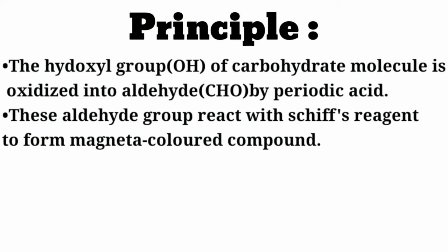The principle of PAS stain: the hydroxyl group (-OH) of carbohydrate molecules is oxidized into aldehyde (-CHO) groups by periodic acid. This aldehyde group then reacts with Schiff reagent to create a magenta-colored compound. This is the simple principle of PAS stain.